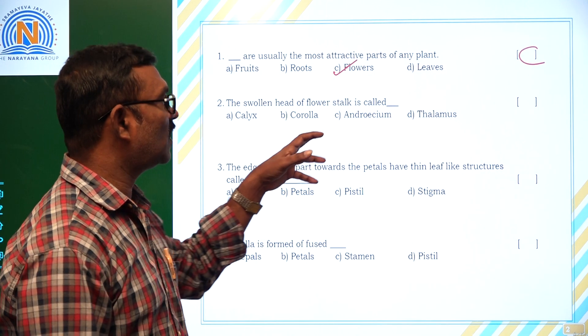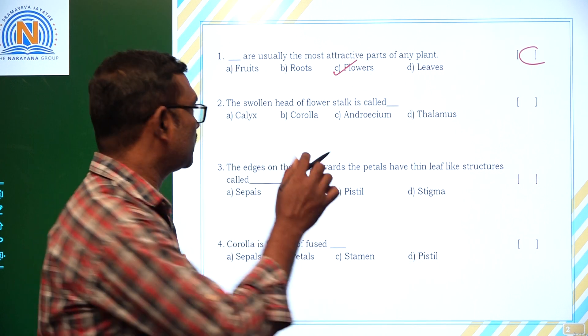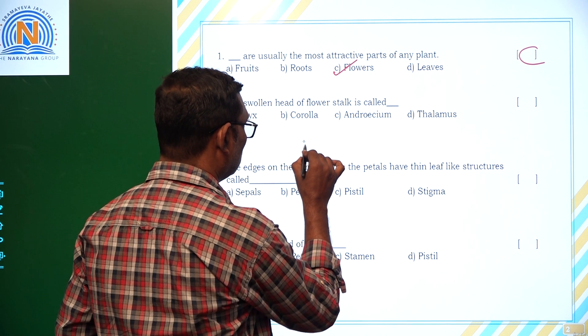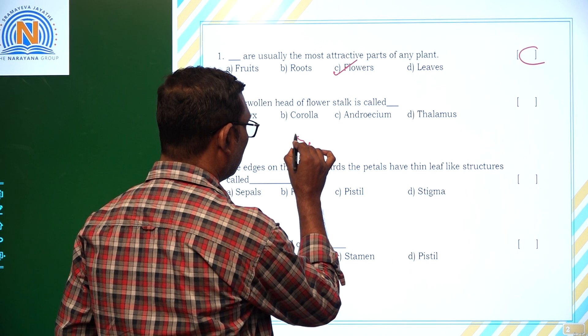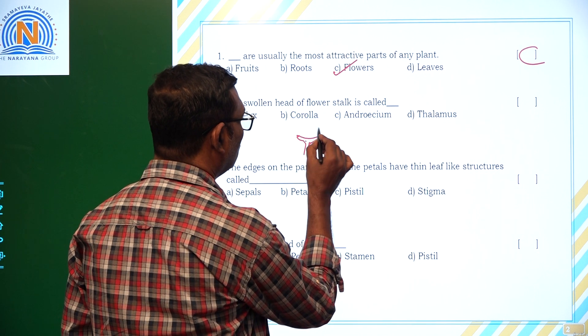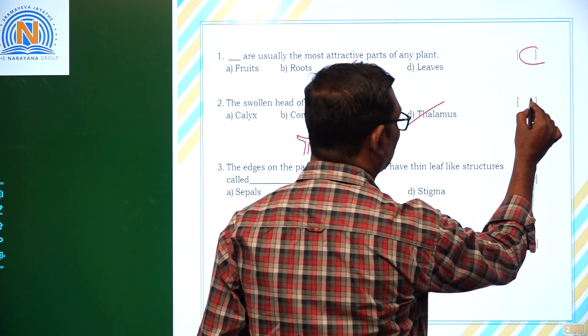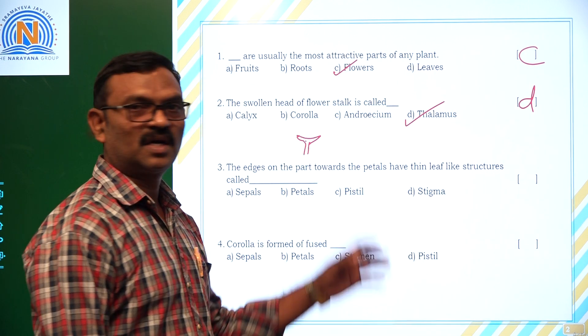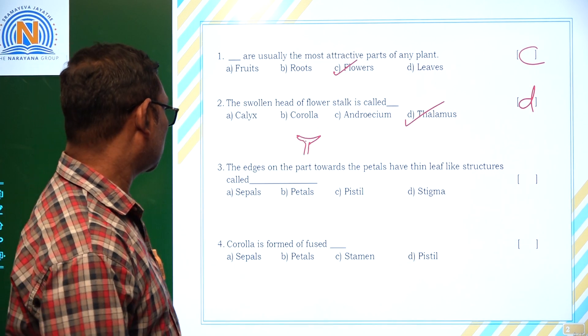The swollen head of the flower stalk is called flower stalk. Suppose this is the stalk. The swollen head, this is called swollen head. It is called thalamus. So the head of the flower stalk is called thalamus.